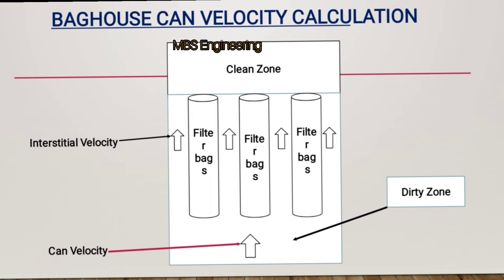Please refer to the simple sketch for understanding the can velocity. Can velocity is the vertical gas velocity throughout the housing, above the hopper level but before reaching the bottom of the bags.